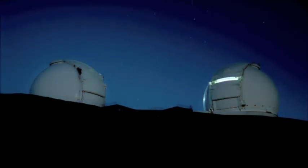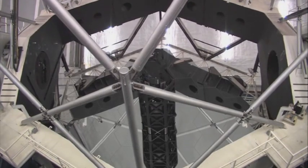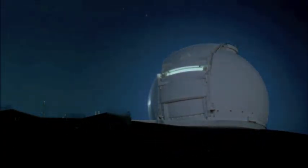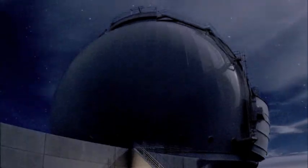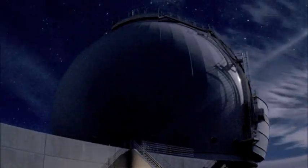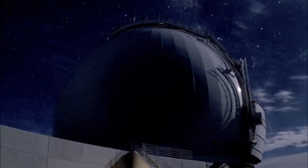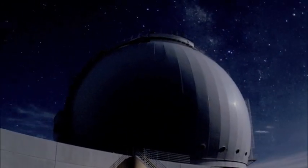The Binocular Keck Telescope in Hawaii, with its twin 30-foot mirrors, is one of the most powerful land-based telescopes ever built. But even this vast machine can't see distant planets.